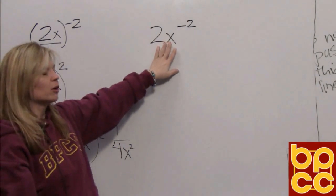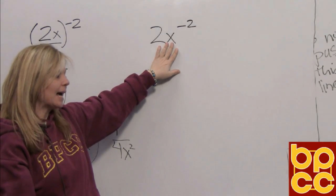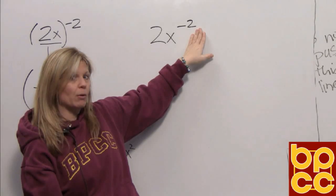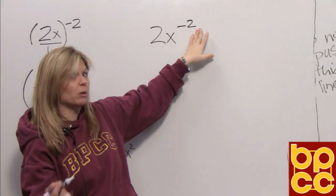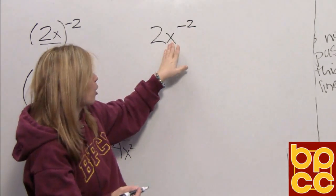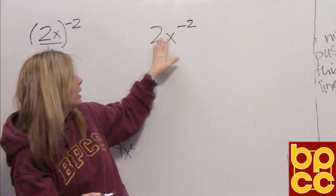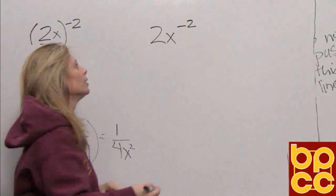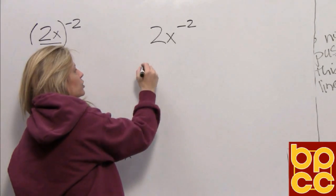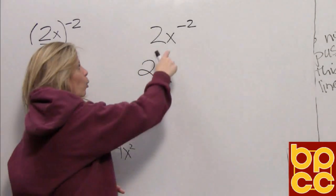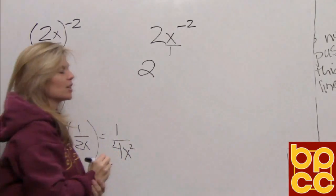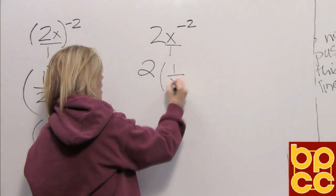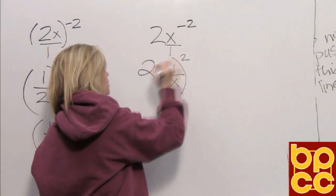Now if you come over here to expression 10. Even though it looks the same it's not. We have the negative exponent which means we have to change that exponent to be positive. But this exponent only belongs to the x. It doesn't belong to the 2 because we do not have parentheses. So again we're not going to do anything with the 2. The 2 is going to stay. We're going to flip x. X as a fraction is x over 1. So to do the reciprocal would be 1 over x. And now that exponent is squared.